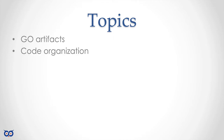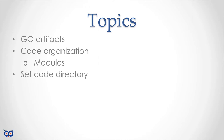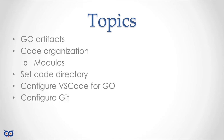We'll also talk about code organization. This is important because things have changed from how Go used to expect and store your source code. We now have Go modules, which are a lot better and give us a lot of flexibility. We'll also talk about setting up your code directory and how to configure Visual Studio Code. Optionally, if you installed Git, we'll talk about configuring Git.